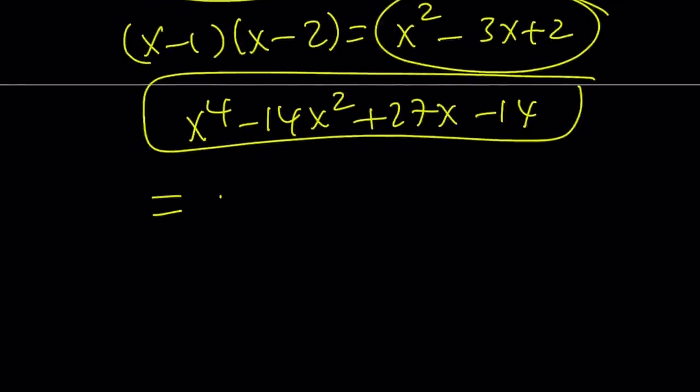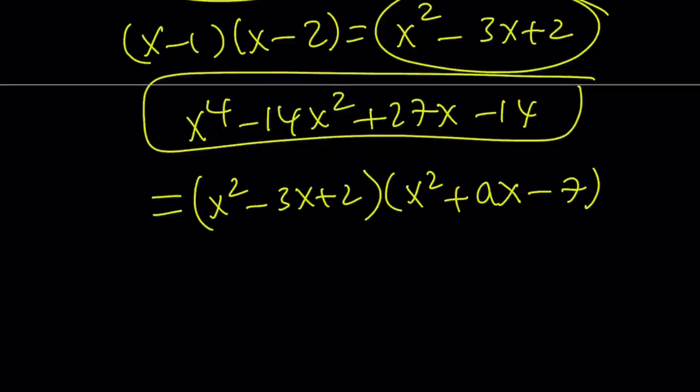But there's also another way to look at it. You can set this equal to—I know one of the factors. And the other factors should look like this: x squared plus ax minus 7. Why? Because x squared times x squared is x to the 4th. That's the only way to get x to the 4th from here. And the constant is negative 14. So, the only thing you need to find is a single variable. Easy.